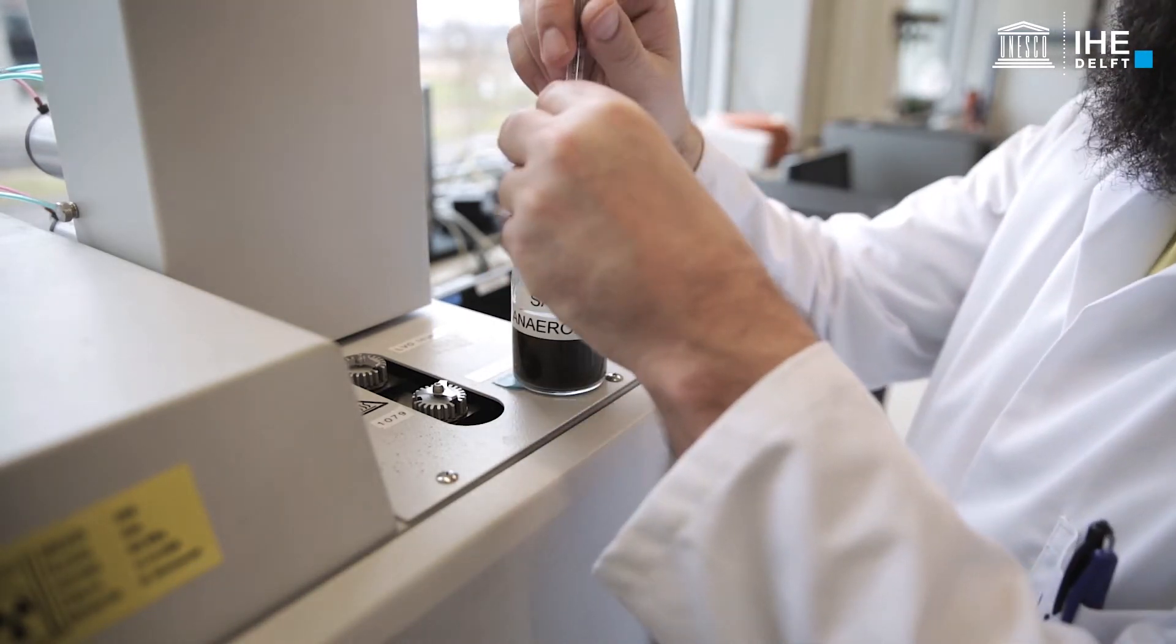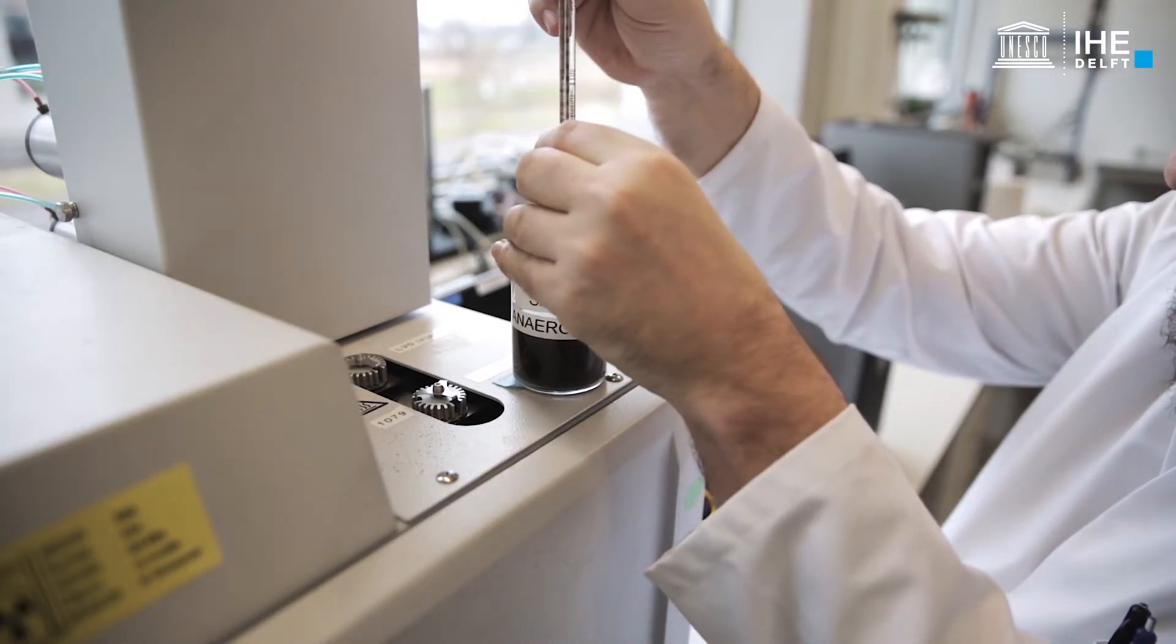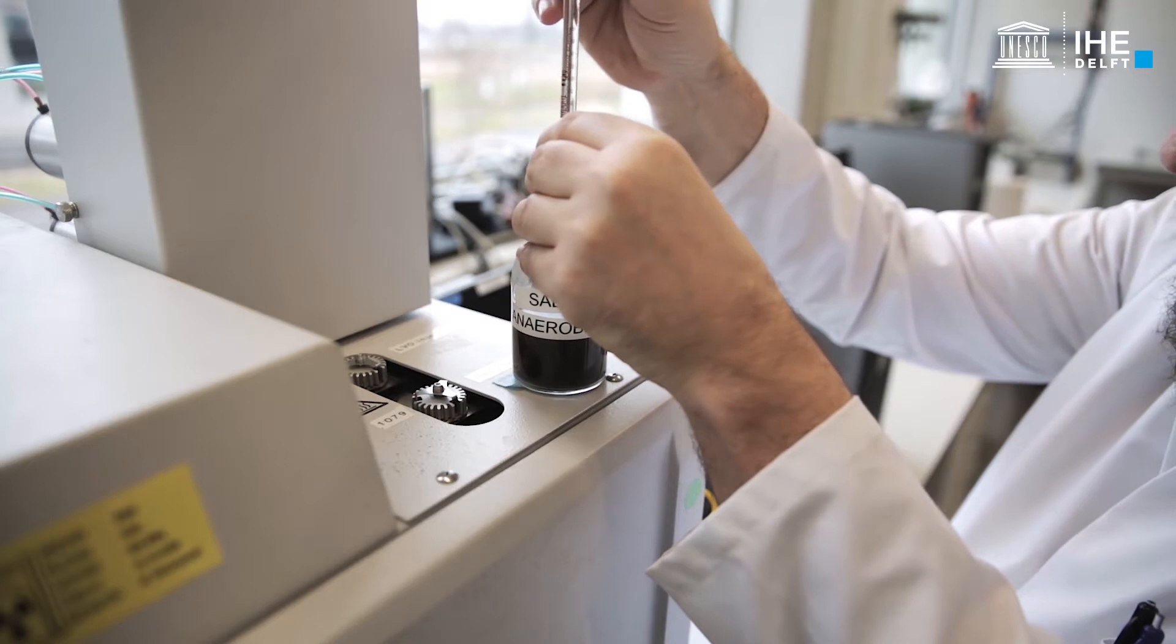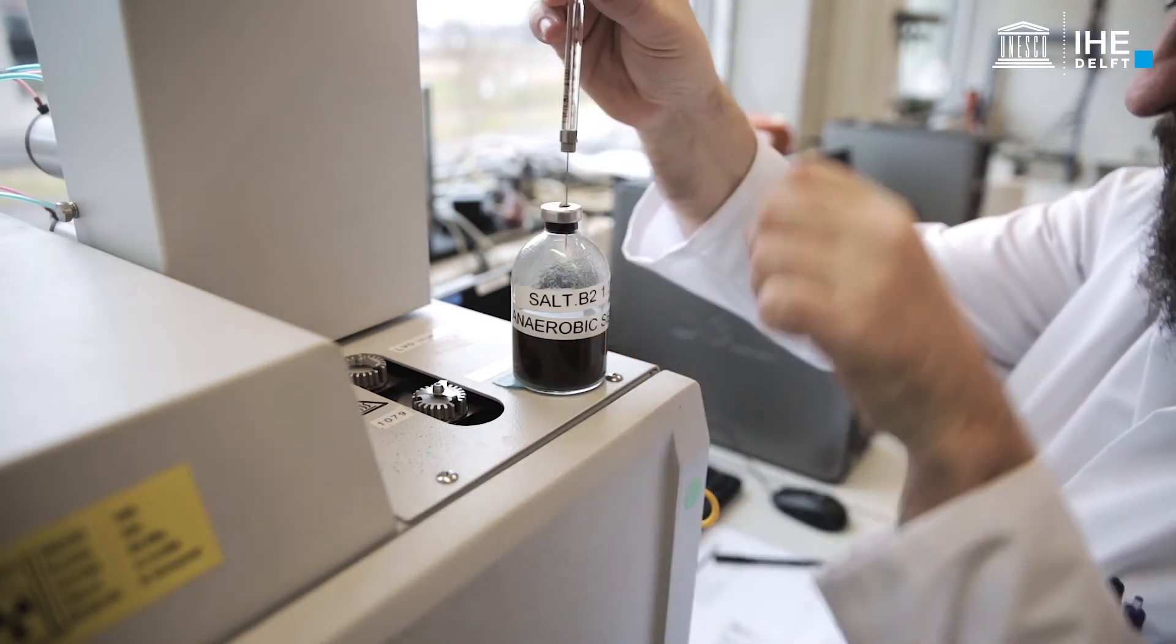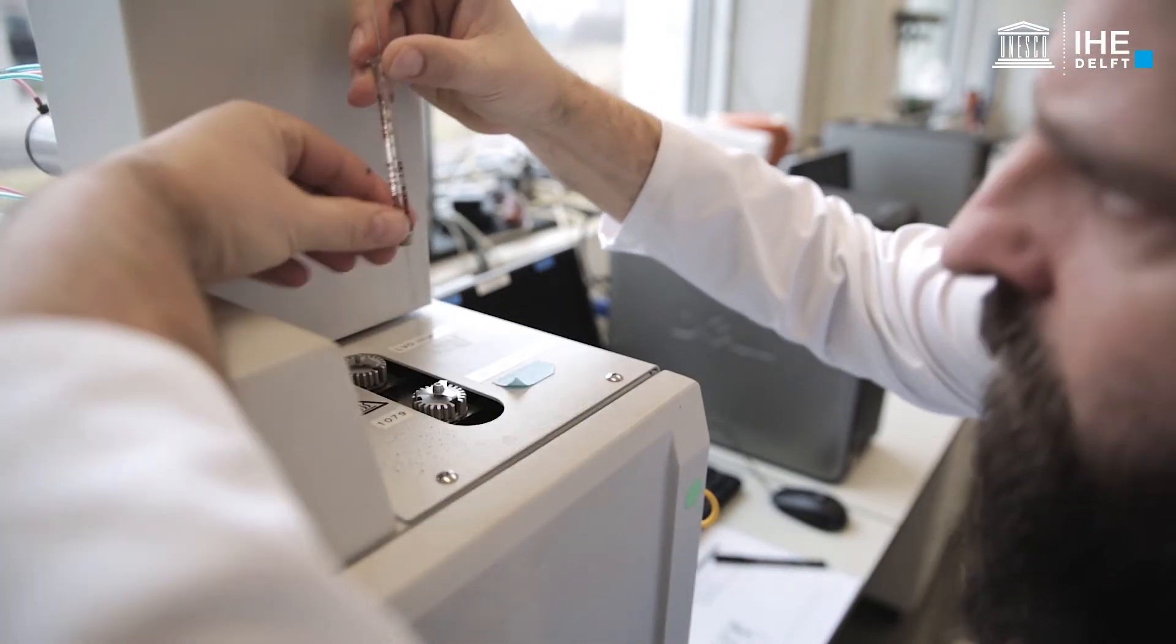After the gas pressure in the headspace has been brought to atmospheric pressure and the volume expansion measured, the headspace is sampled with the gas syringe and the methane and or nitrous oxide concentrations are determined by gas chromatography.